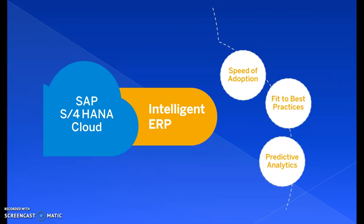In this video session I'm going to discuss only the Intelligent ERP topic. SAP S4 HANA Cloud Intelligent ERP has three major pillars: speed of adaption, fit to best practices, and predictive analytics. There are a lot of innovations in Intelligent ERP, and it makes use of almost all the latest technologies that SAP S4 HANA has recently adopted, including artificial intelligence, machine learning, Internet of Things, and natural language processing.